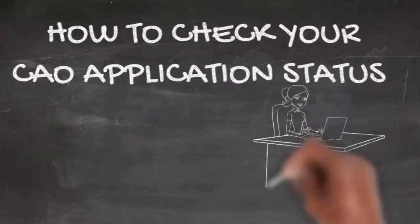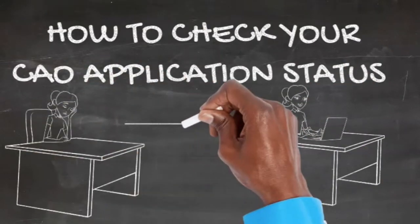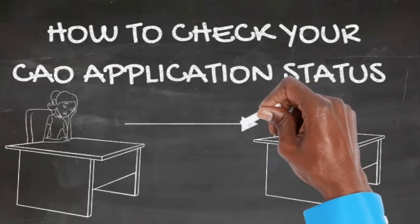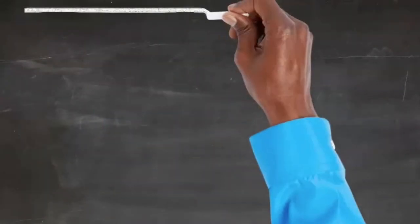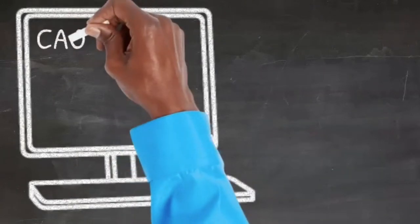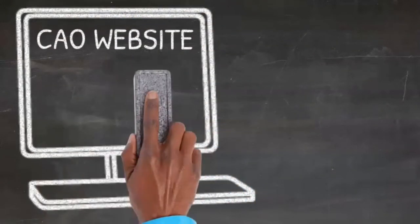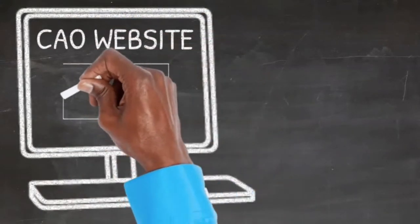Welcome back to Careers Portal and today we'll be tackling how to check your CAO application status. CAO stands for Central Applications Office and is used for university applications, TVET college applications, and even private college applications.